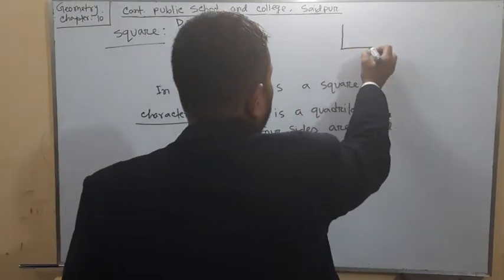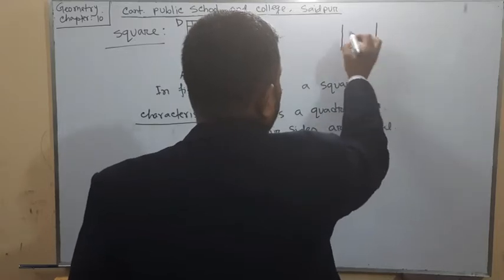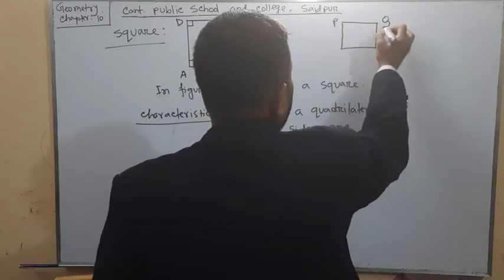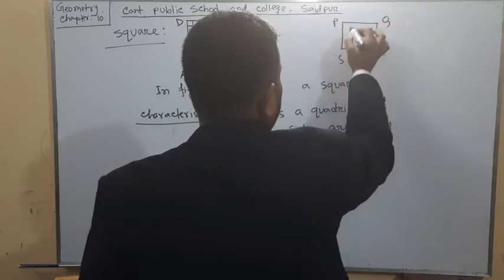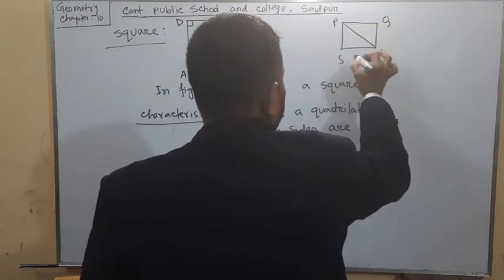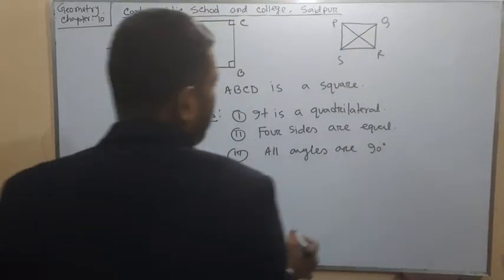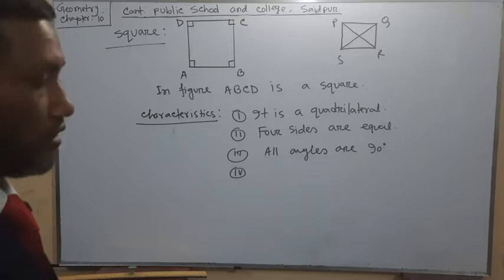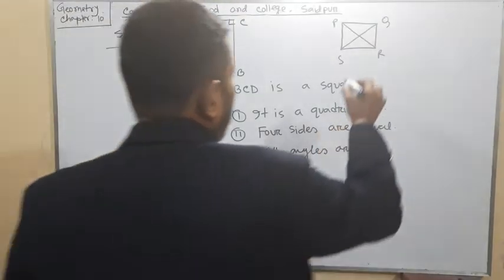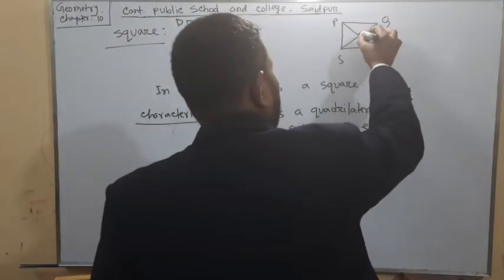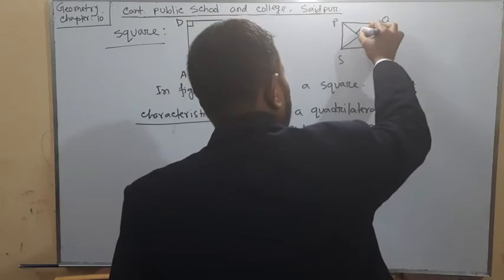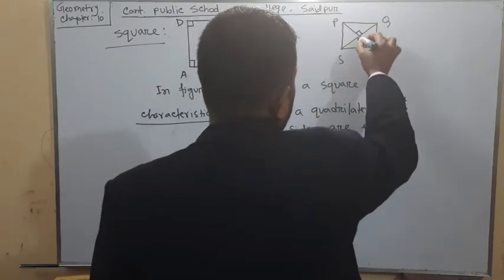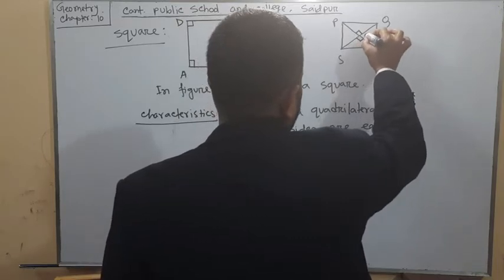Suppose this is a square P, Q, R, S. These two diagonals: the measure of the two diagonals will be equal and they bisect each other at a right angle — that is, the measure of the angle at the intersection will be 90 degrees.